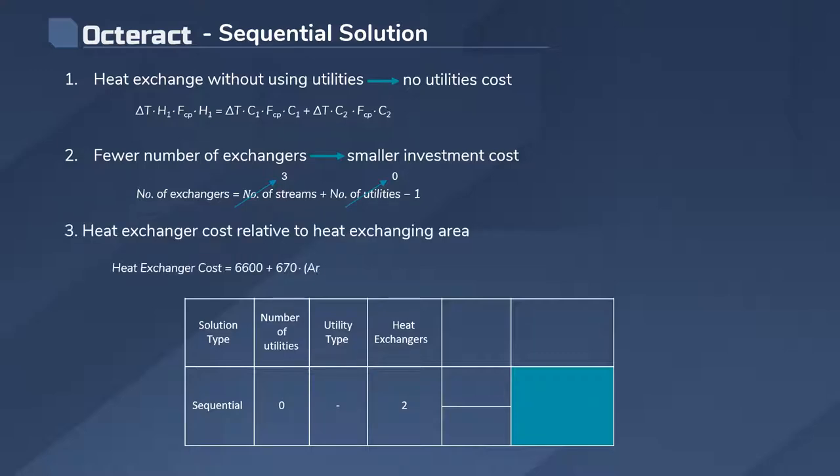Now, using the relationship between the cost of the heat exchanger and the heat exchanging area, which as we can see is non-linear, we find that we need to acquire two heat exchangers with the corresponding areas HE1 and HE2 shown in the table.